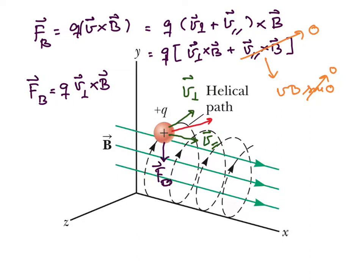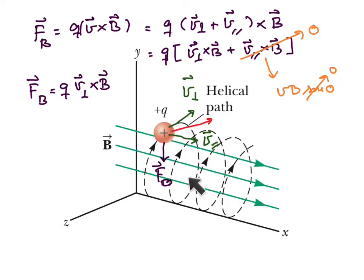The total trajectory is a helix, or a helical path — like a coil spring. The particle moves in a circle at the same time that it moves with constant speed in the direction of the magnetic field. In many magnetic phenomena, when you fire a charged particle into a magnetic field, you will see this kind of helical path, which comes from these two components of the velocity vector.